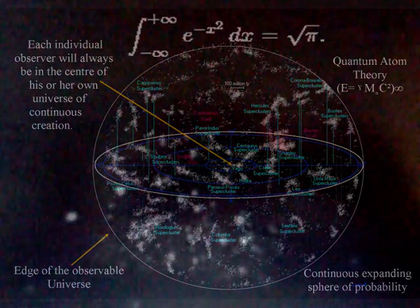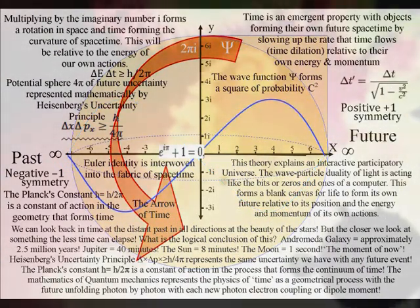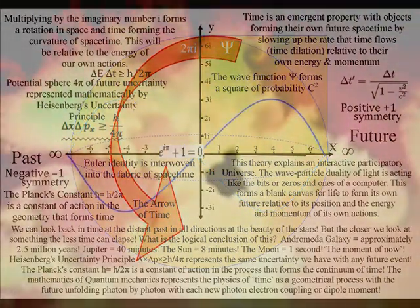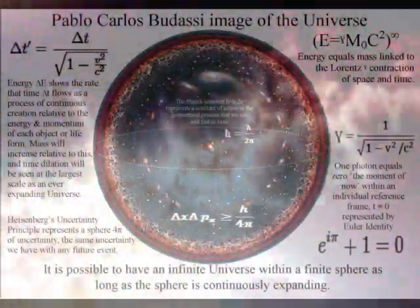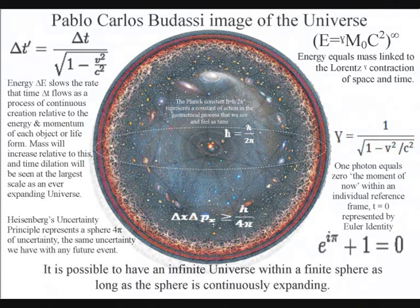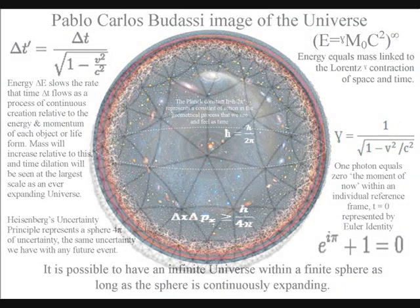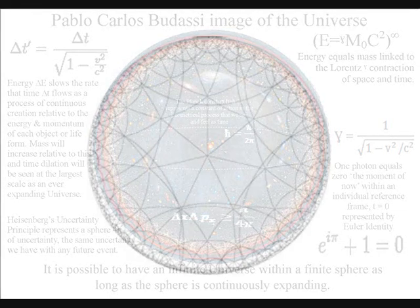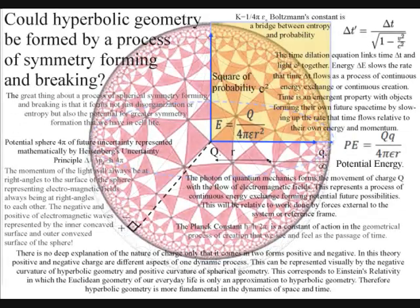It is possible to have an infinite universe within a finite sphere, as long as the sphere is continuously expanding. This can be visualized in fractional geometry, where we have infinite diversity on the border of a finite geometrical object. In such a theory, the universe would be a continuum of continuous energy exchange, forming the time dilation of Einstein's relativity, with the energy slowing up the rate that time flows as a universal process of continuous creation. This can also be visualized using hyperbolic geometry, with every point and every direction being relative to each other.